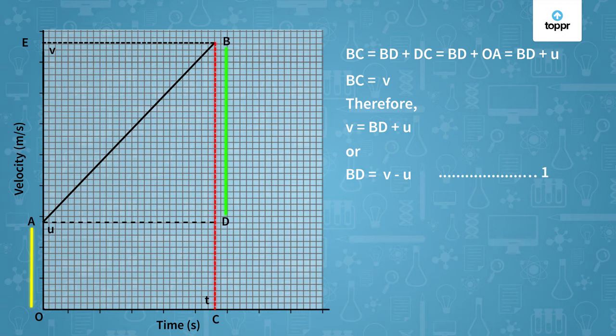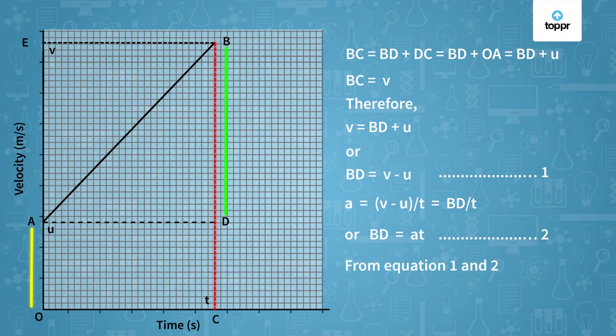Now we already know the formula of acceleration. Acceleration is (v - u)/t. V - u is nothing but BD. So we can say that a = BD/t or BD = at. This is our equation number two. From equations one and two we can see that at = v - u or we can say that v = u + at. This is our first equation of motion.